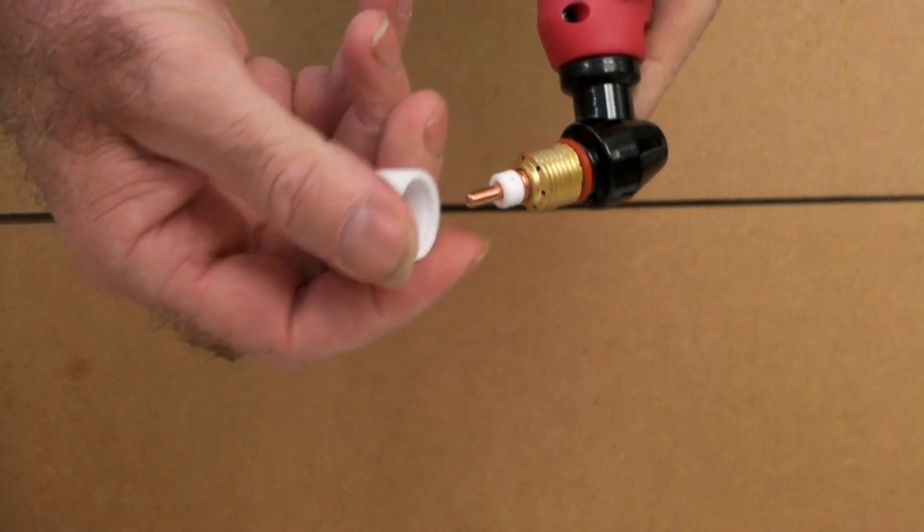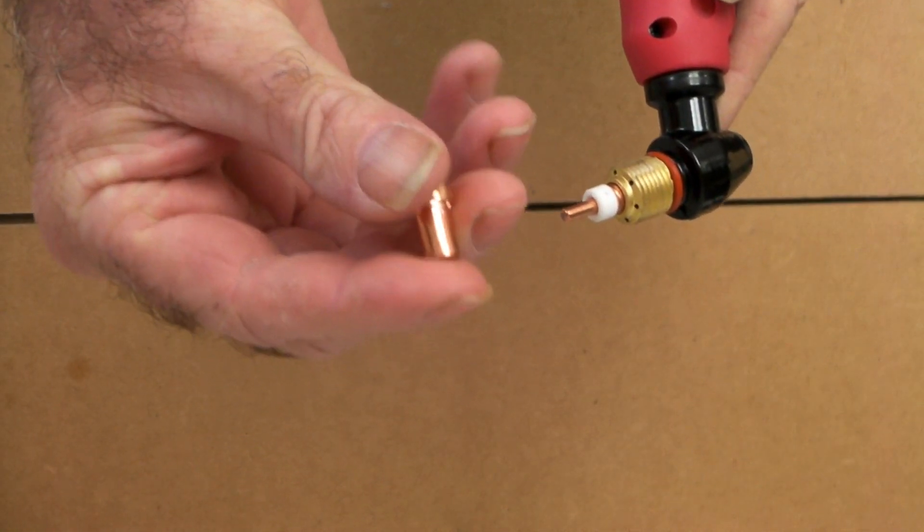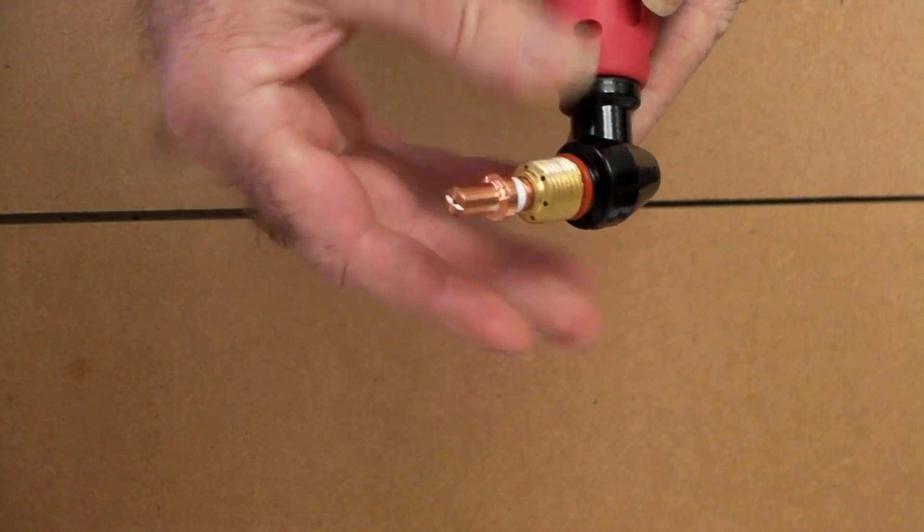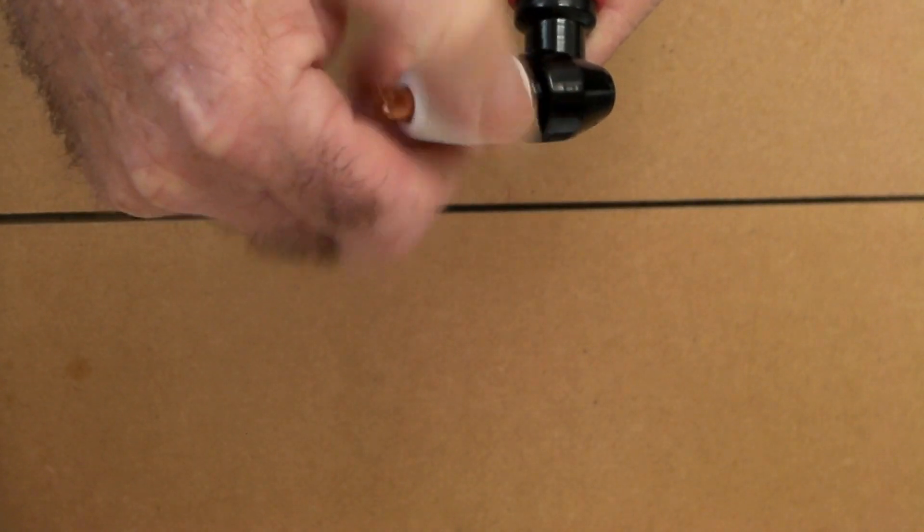It's not a Pilot Arc machine. Just a standard HF tip - you put it on the torch and then you drag it along whatever you're cutting.